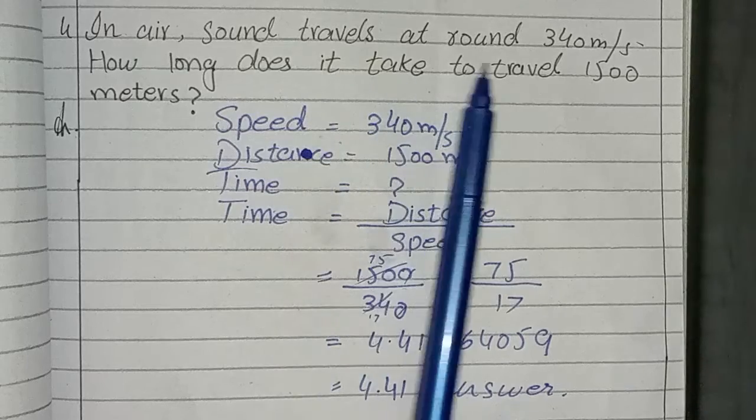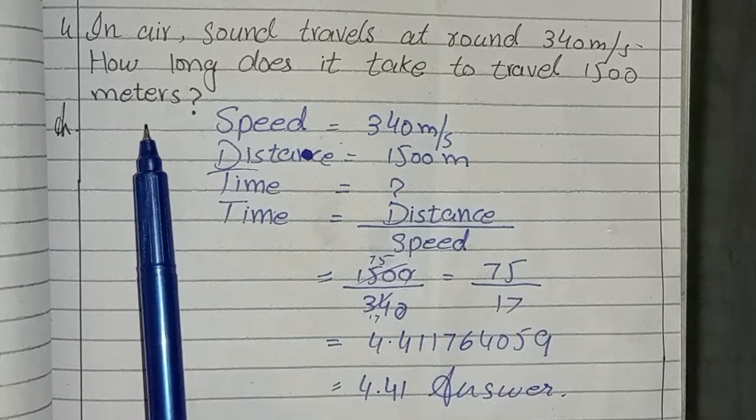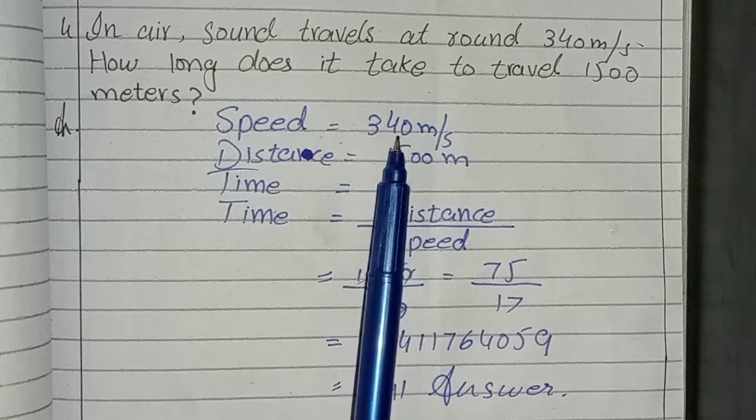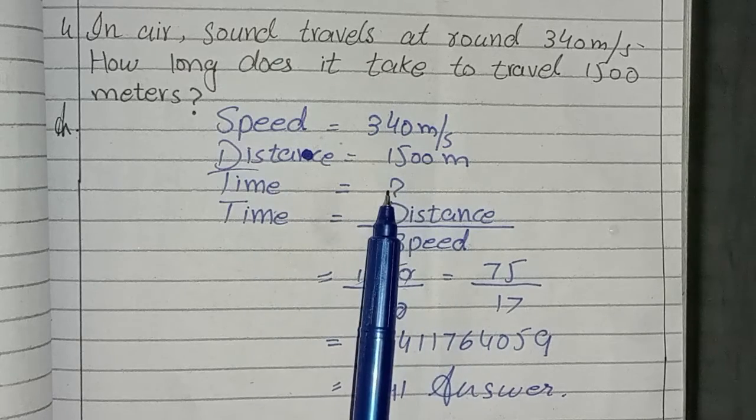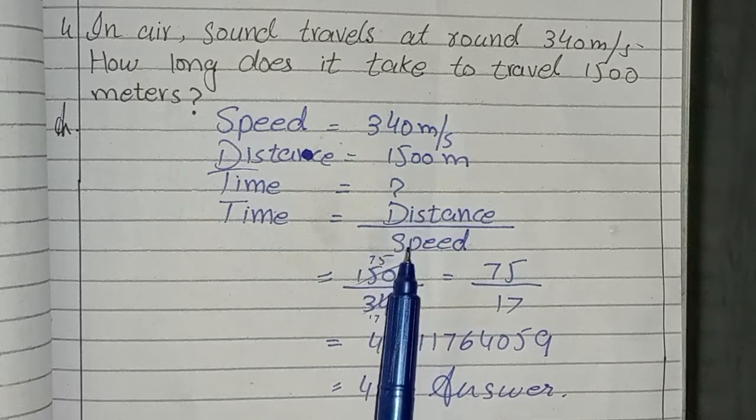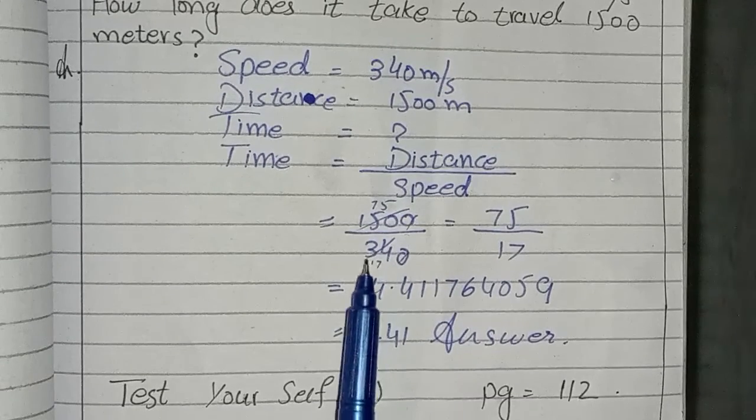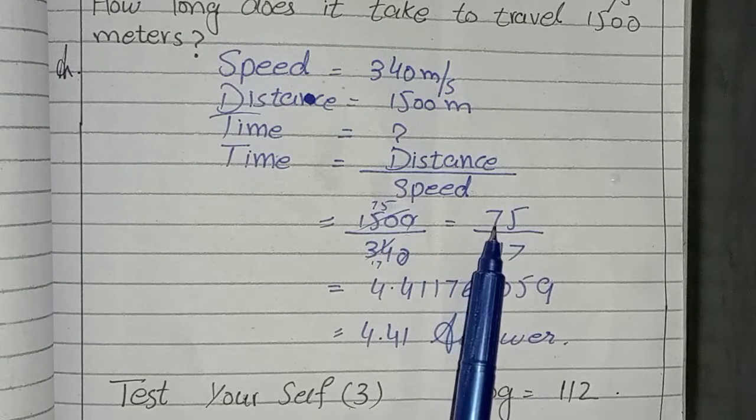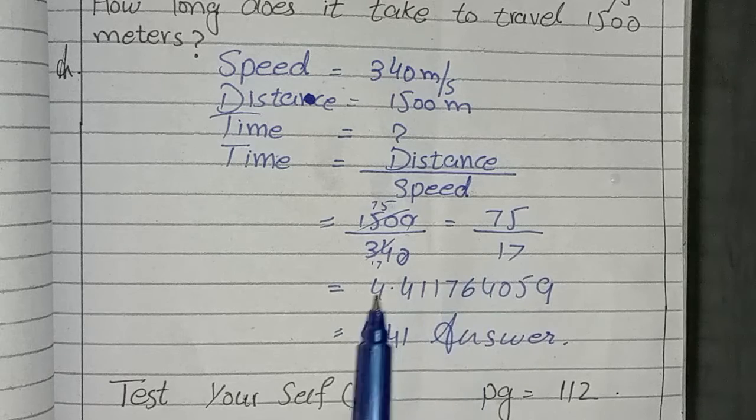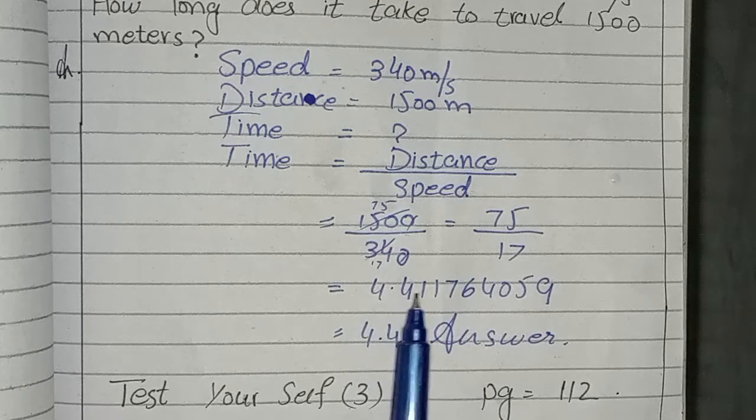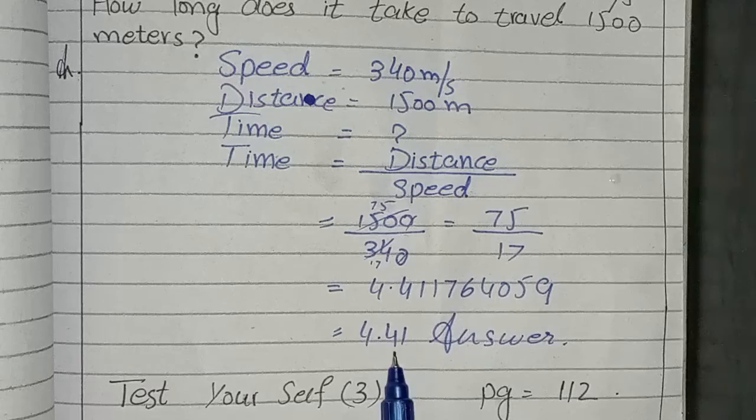In air, sound travels at around 340 meter per second. How long does it take to travel 1500 meters? Speed is given here, 340 meter per second. Distance is 1500 meter. Time is unknown. Time is equal to distance over speed. Now put it here: distance is 1500 meter, speed is 340 meter. After cutting, then you will have to divide it. 4.411, but it is not too long. 4.41. After decimal, these two figures are enough.